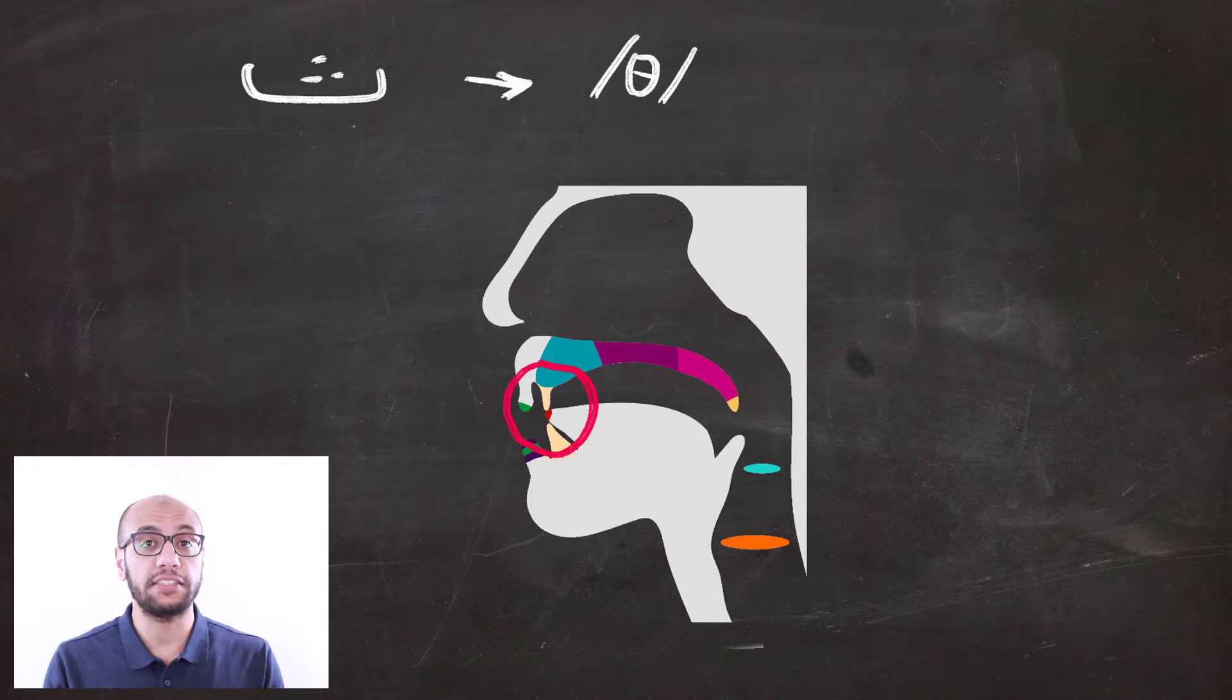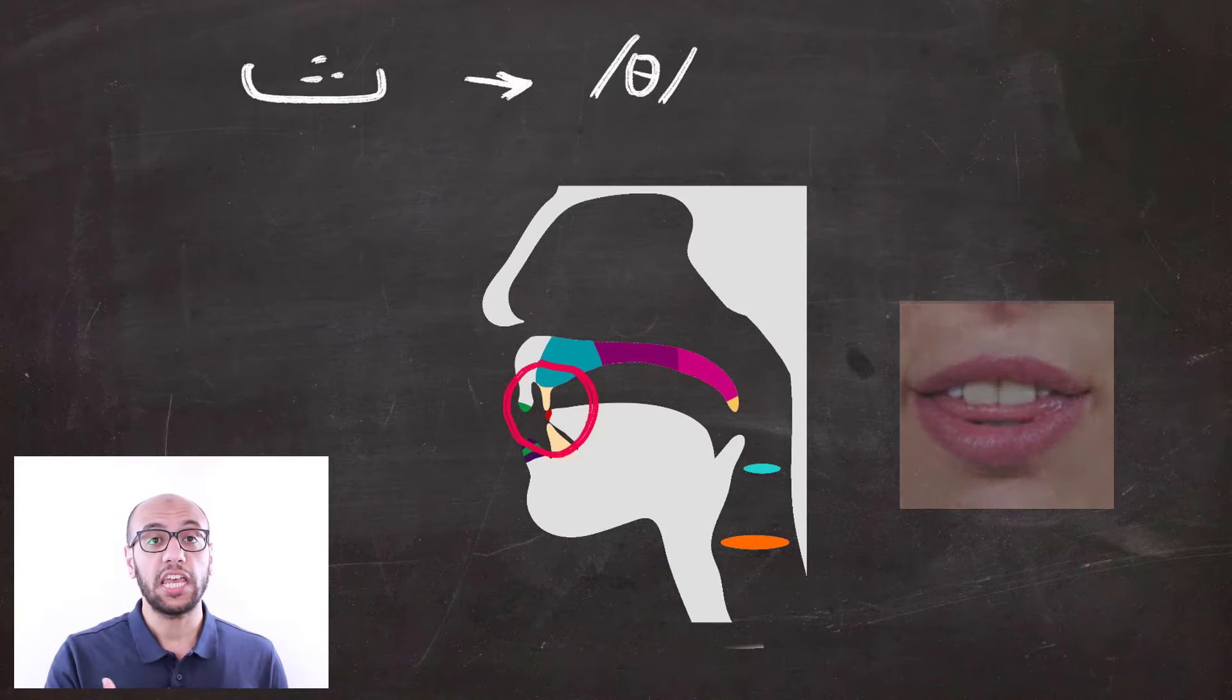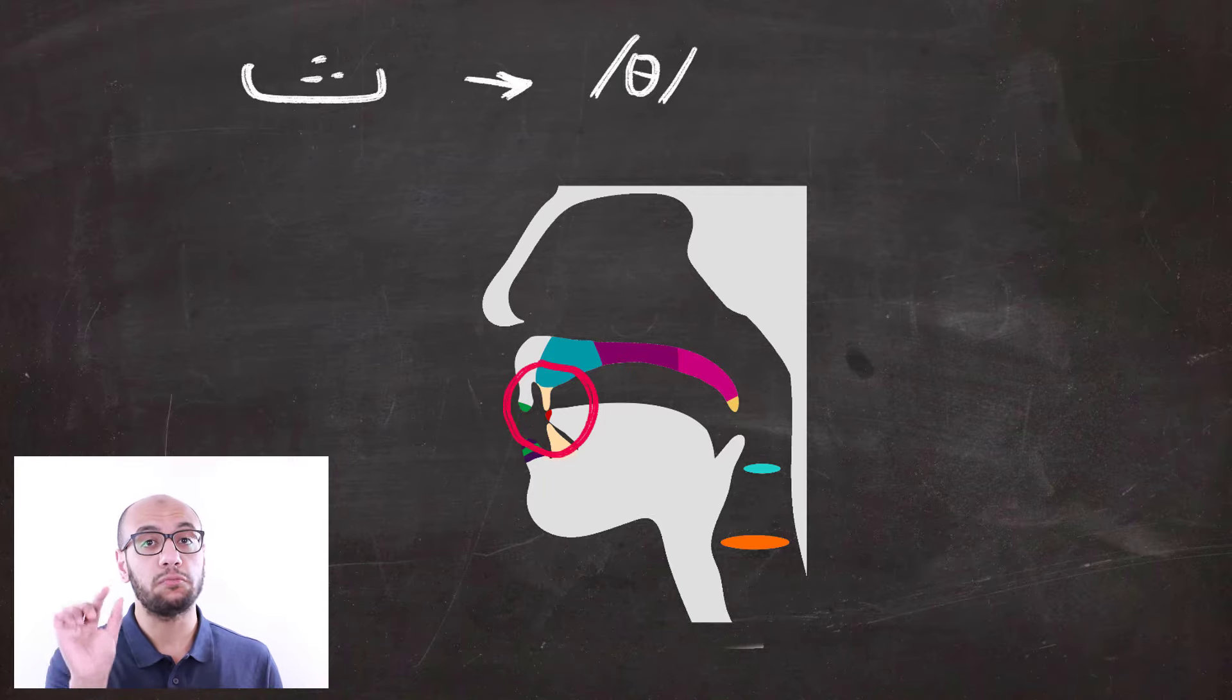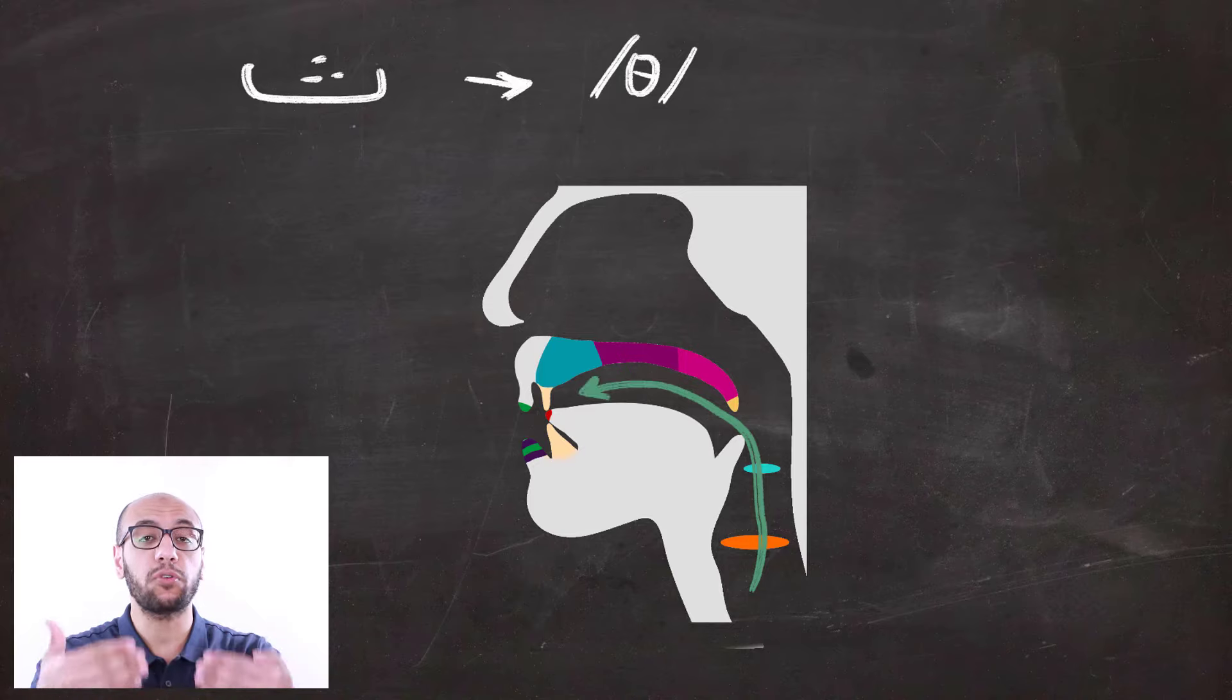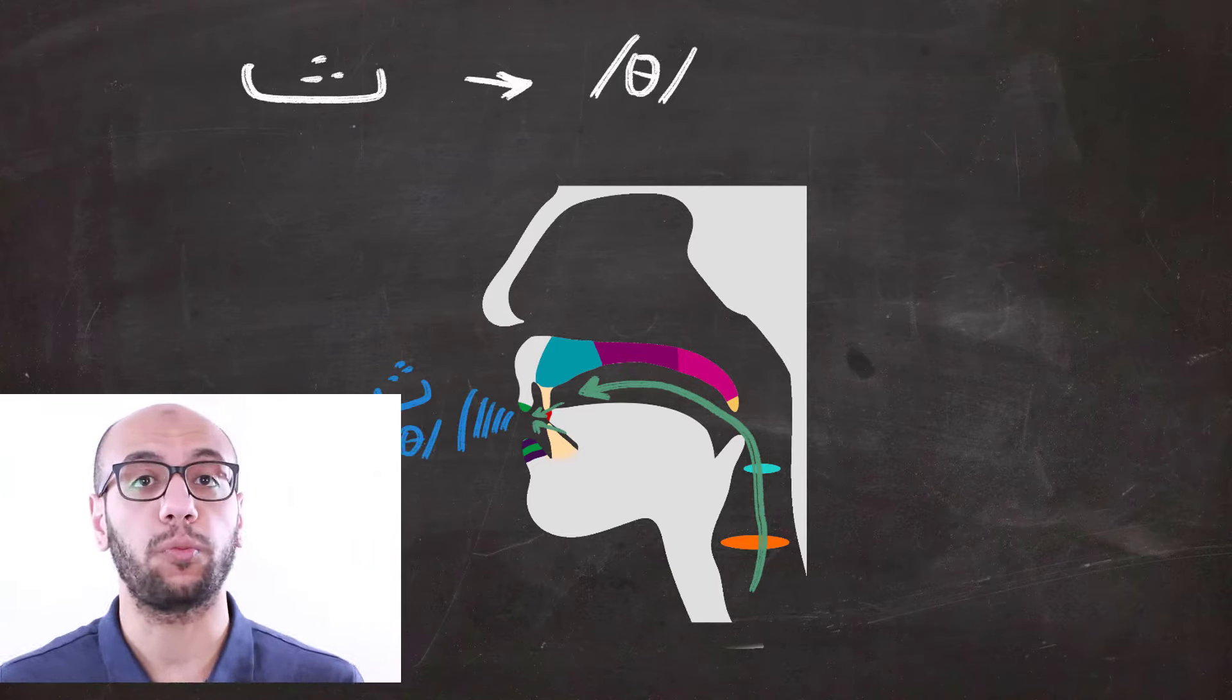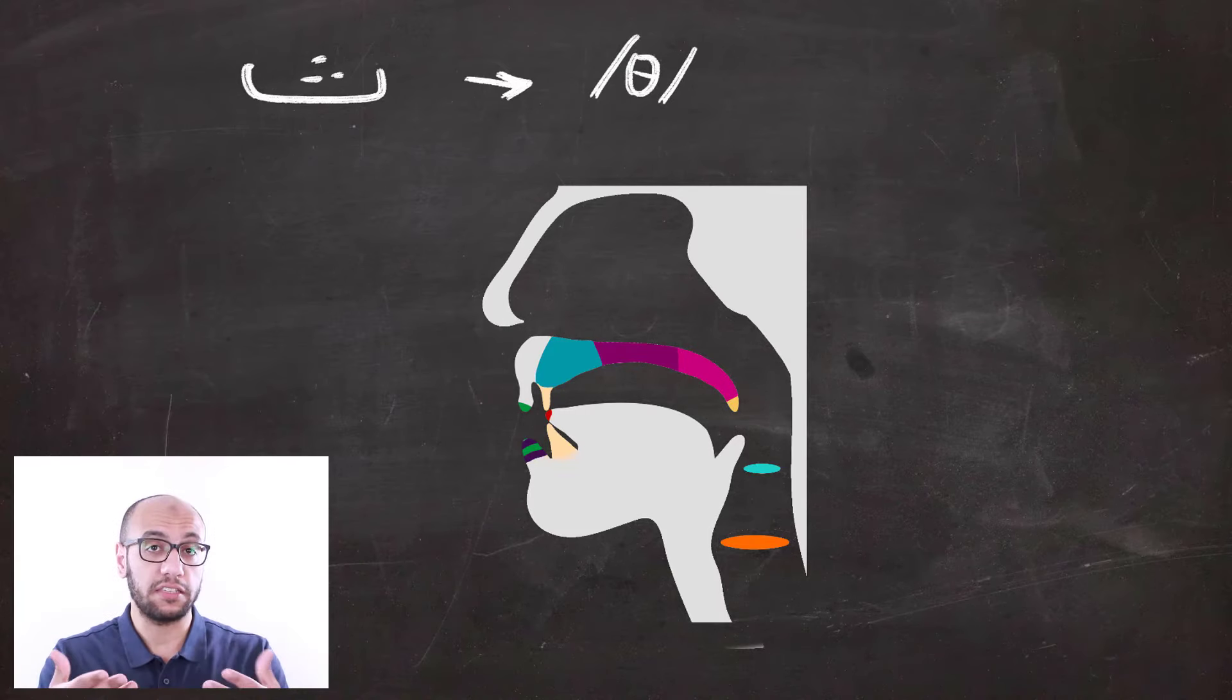Th is produced by placing the tip of the tongue between the front teeth, like that. The trick is that you should leave a small enough space for air to get out through this opening. Then you're going to be forcing air through this very small opening, like so.